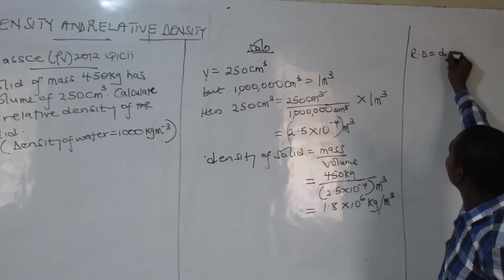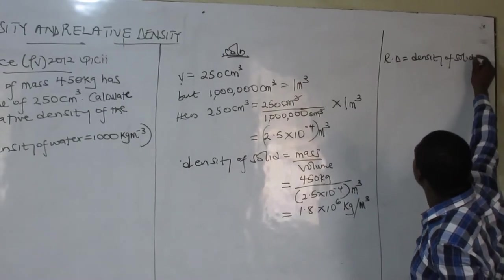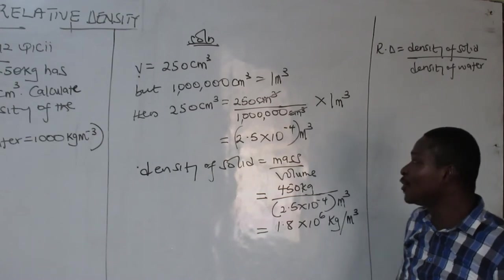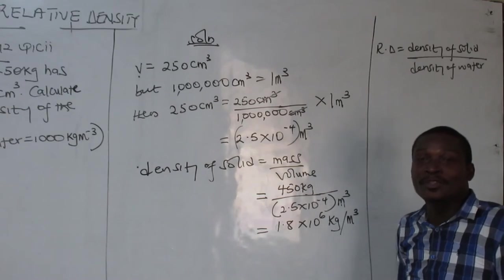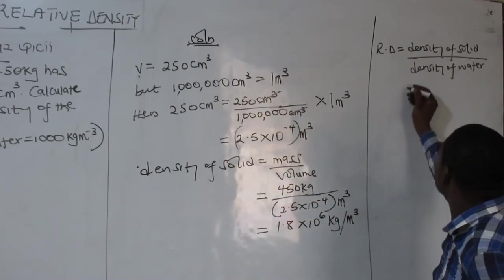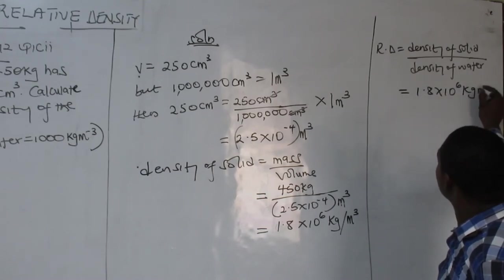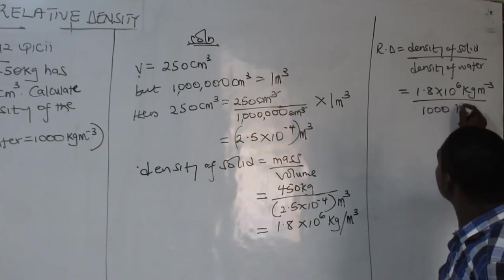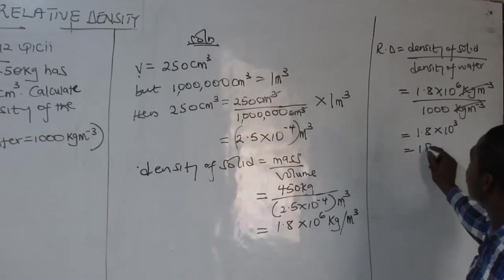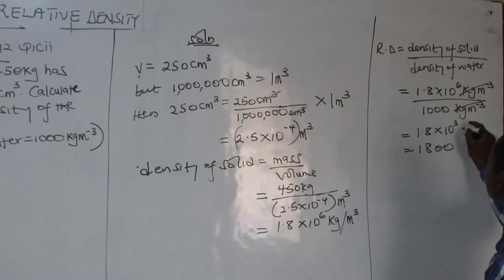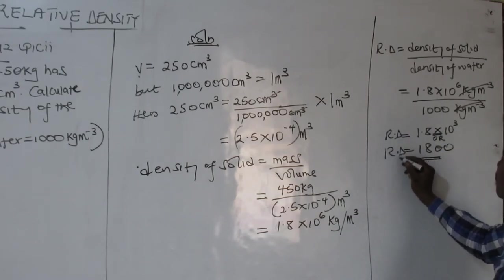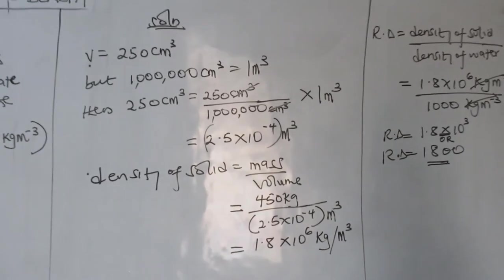Now I have enough to calculate the relative density of the solid. Relative density equals density of solid over density of water. The density of water is always the known standard value. I did not use mass of solid over mass of water because I have densities, not masses. The density of the solid is 1.8 × 10³ kg/m³ and that of water is 1 × 10³ kg/m³. Cancelling units gives 1800. Relative density has no units — rd = 1800.